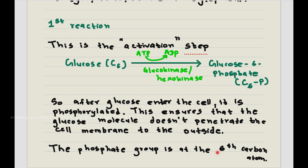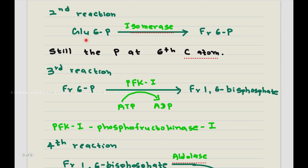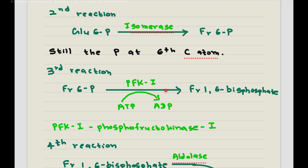The phosphate group is seen on the sixth carbon atom. Next, glucose-6-phosphate with the help of isomerase is turned into fructose-6-phosphate, where the phosphate group is also on the sixth carbon atom. Then, fructose-6-phosphate with the help of phosphofructokinase-1 turns into fructose-1,6-bisphosphate, and here another molecule of ATP is used up. So up to this point, altogether two molecules of ATP have been used.